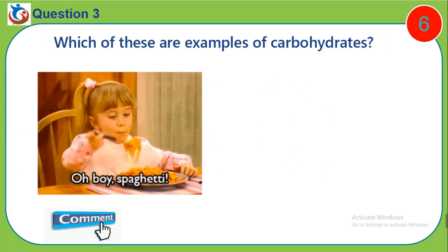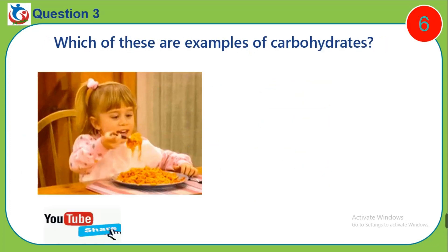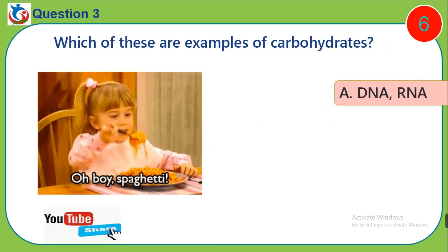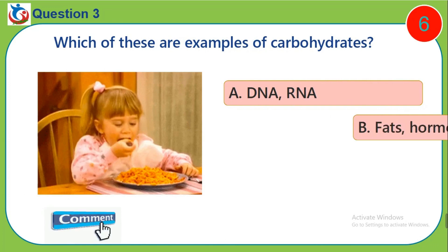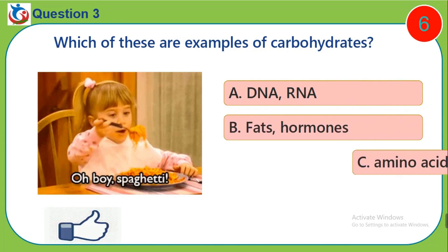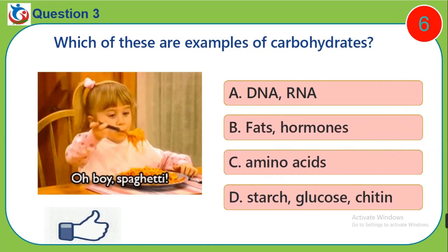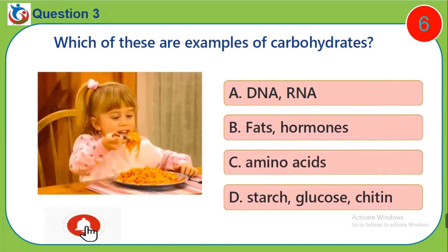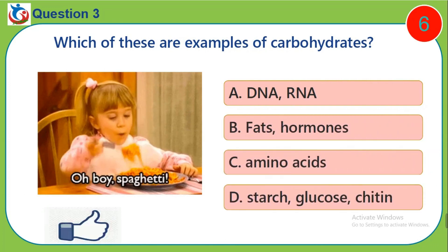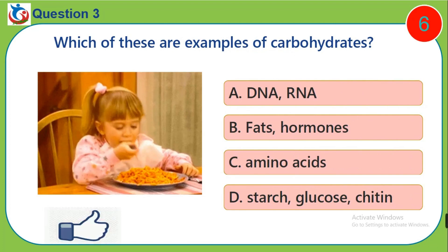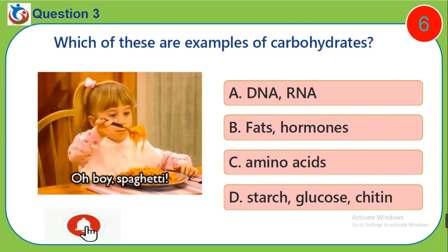Question 3. Which of these are examples of carbohydrates? A. DNA-RNA. B. Fats-Hormones. C. Amino Acids. D. Starch-Glucose-Chitin.